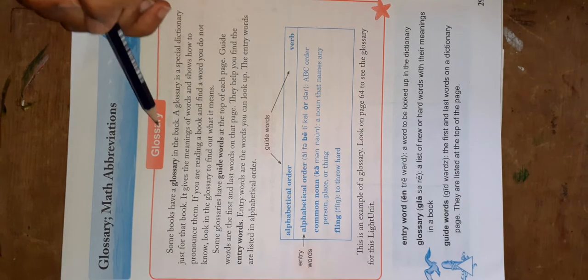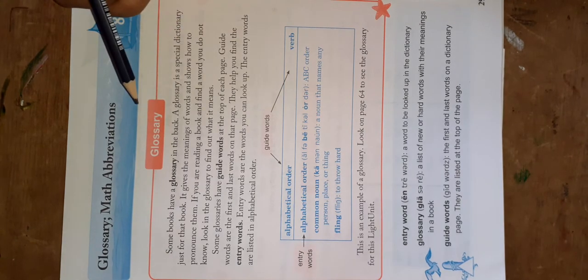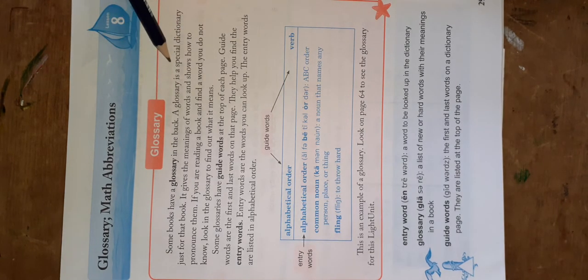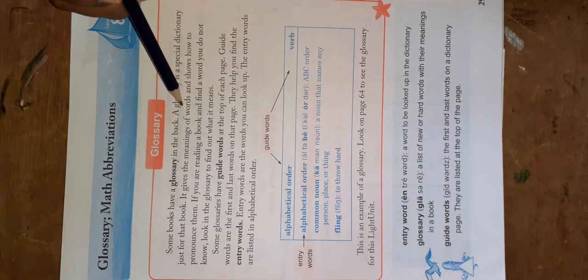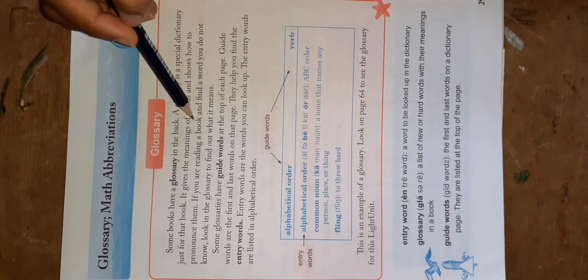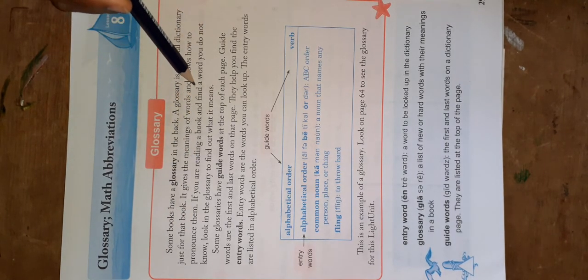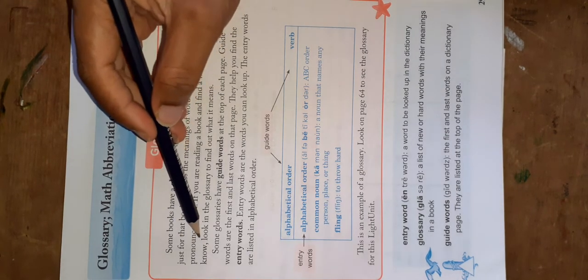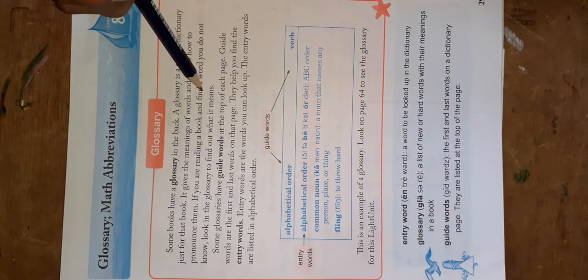Some books have a glossary in the back. A glossary is a special dictionary just for that book. It gives the meanings of words and shows how to pronounce them. If you are reading a book and you find a word you do not know, look in the glossary to find out what it means.